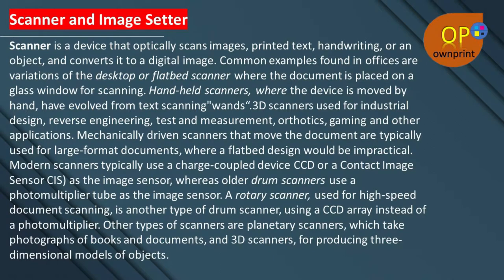3D scanners are used for industrial design, reverse engineering, test and measurement, orthotics, gaming, and other applications. Mechanically driven scanners that move the document are typically used for large-format documents where a flatbed design would be impractical. Modern scanners typically use a charge-coupled device (CCD) or a contact image sensor (CIS), whereas older drum scanners use a photomultiplier tube. A rotary scanner used for high-speed document scanning is another type of drum scanner using a CCD array. Other types include planetary scanners, which photograph books and documents, and 3D scanners for producing three-dimensional models.